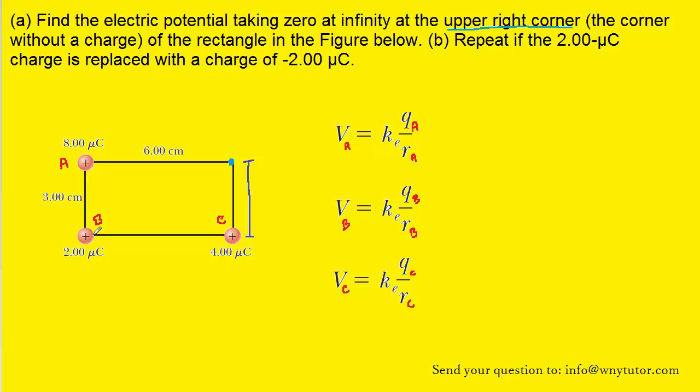Where it gets a little bit challenging is the distance from charge B to the upper right corner of the rectangle. But, in fact, we can find that distance by using the Pythagorean theorem. Note that this side is opposite to the 6 centimeter side, so it too will be 6 centimeters. And then this side right here is opposite to the 3 centimeter side, so it too will be 3 centimeters.